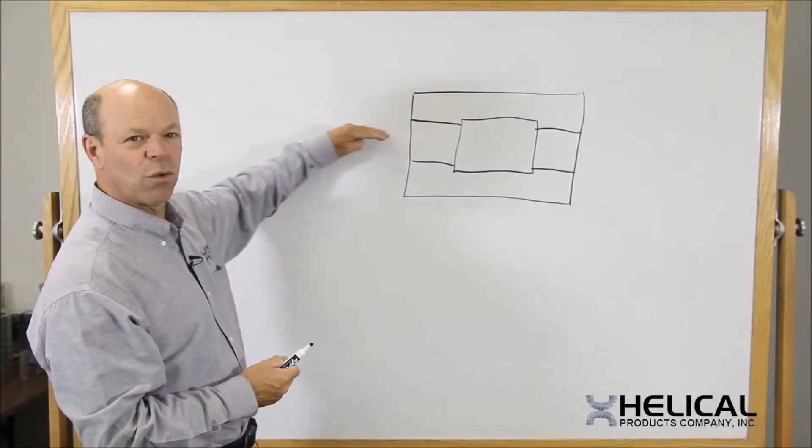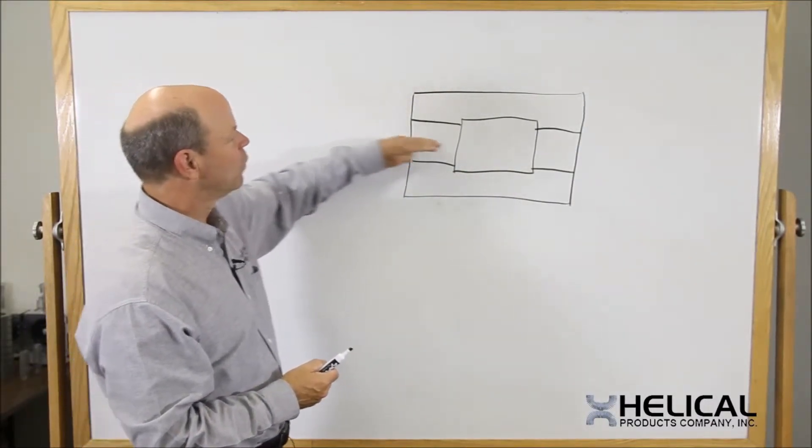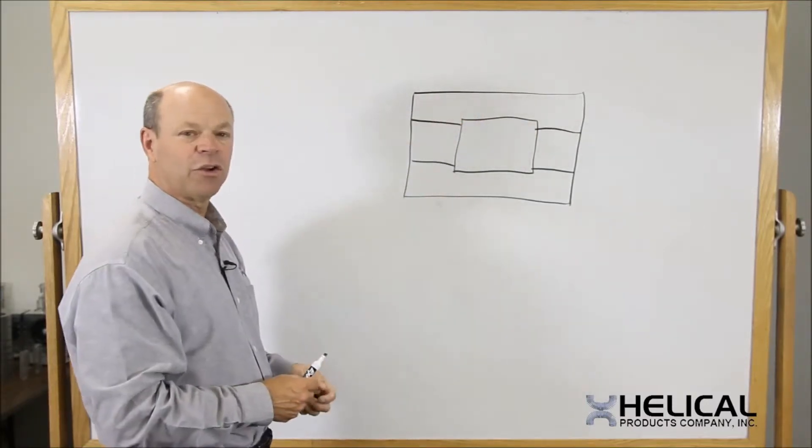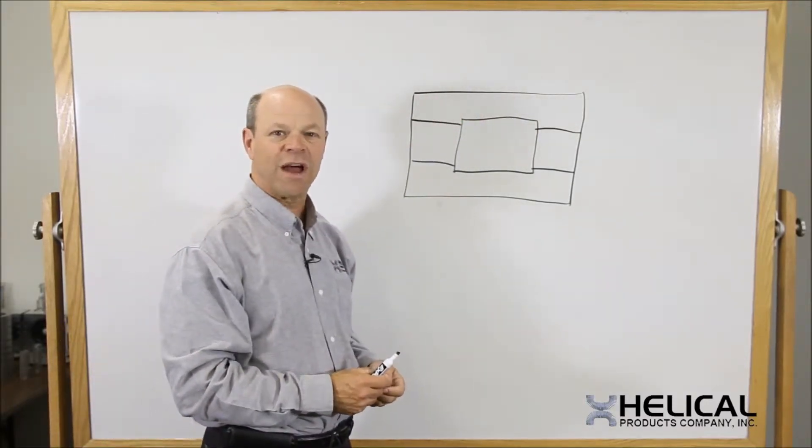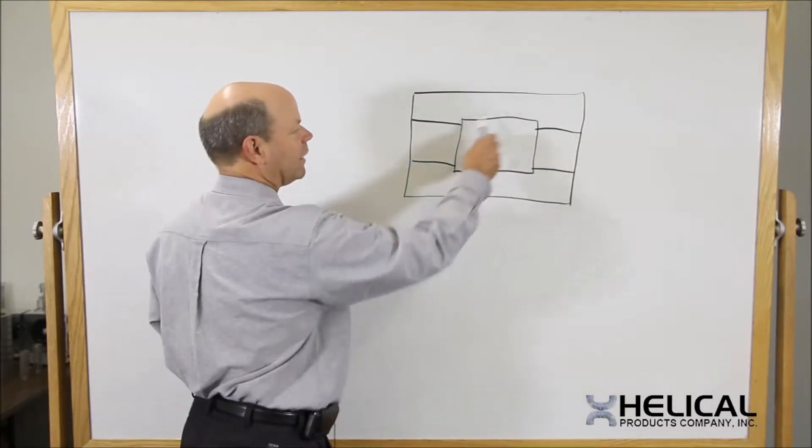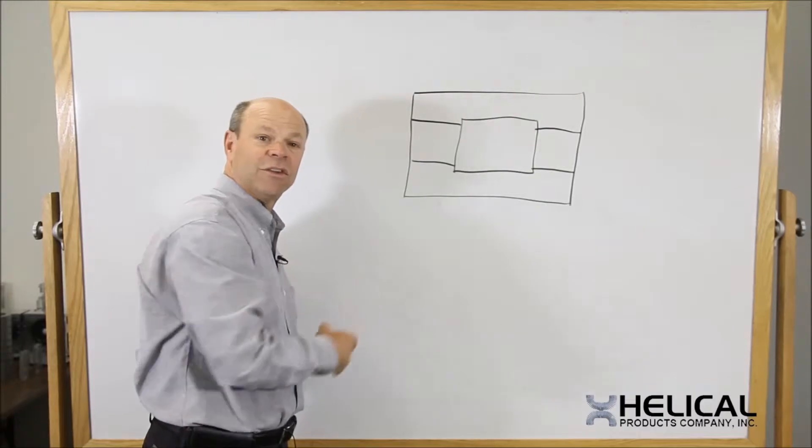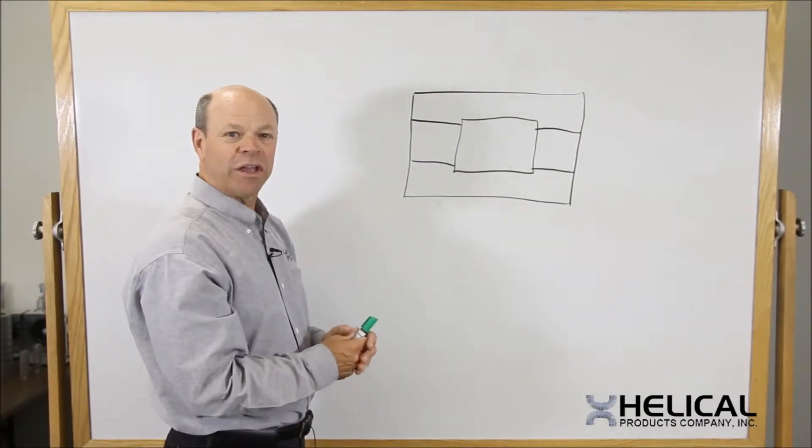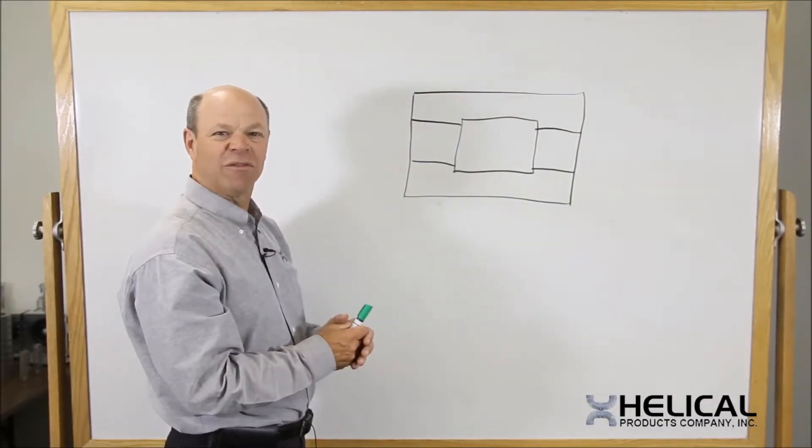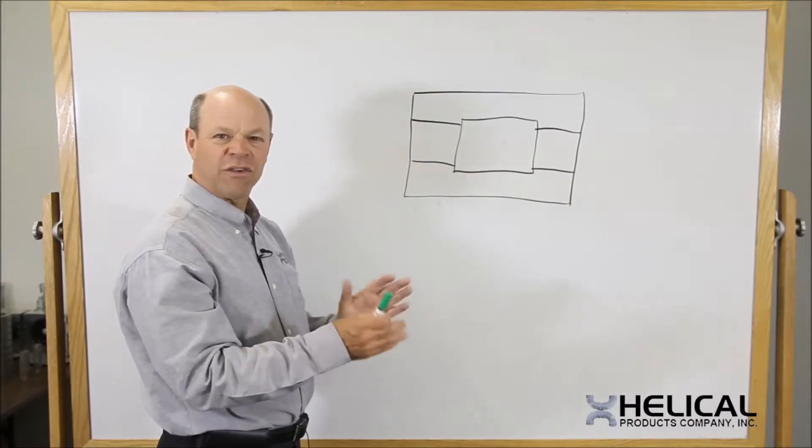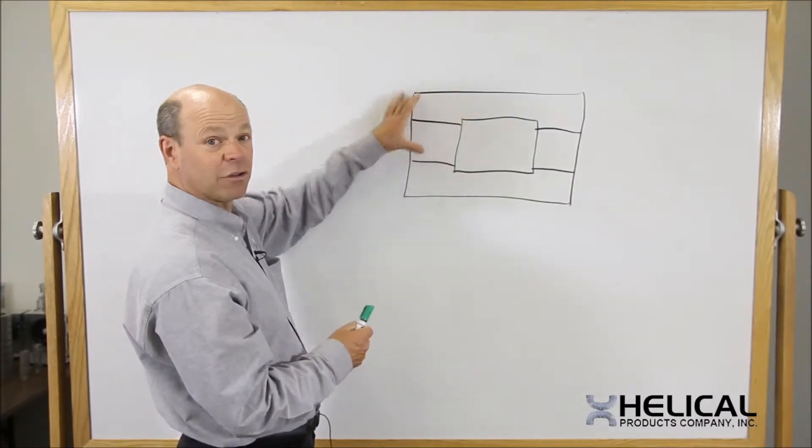So what we do is we go in with a tool, we machine the bore, and then we go with a tool and we open up this area a little bit larger than either of the two shafts. So this area here is called a relief. And it's not much, it's not as much as my sketch here. It typically runs about 30 to 50 thousandths on diameter larger than the bore.